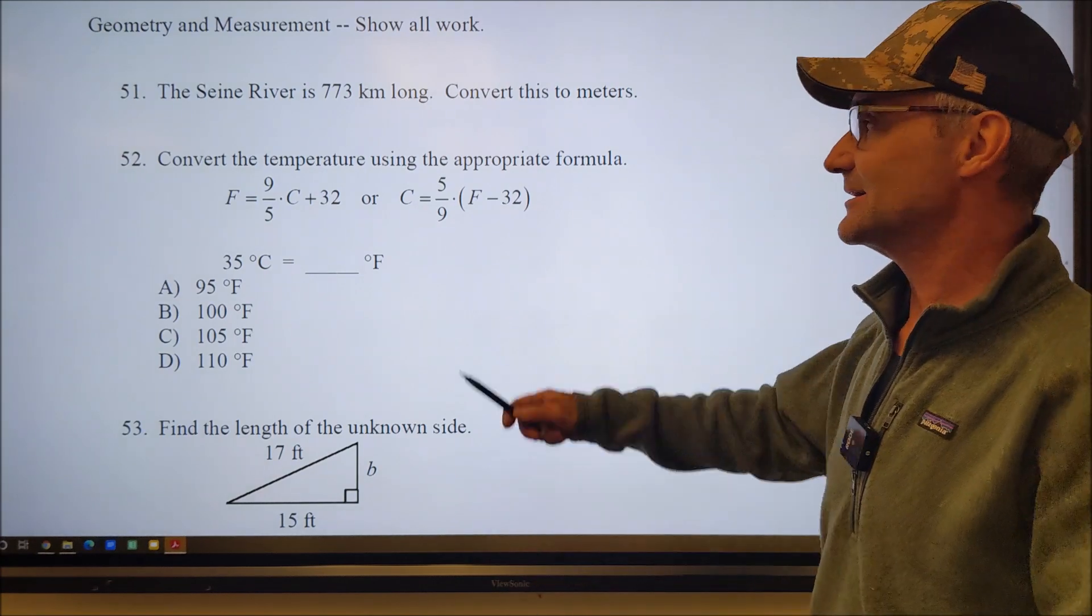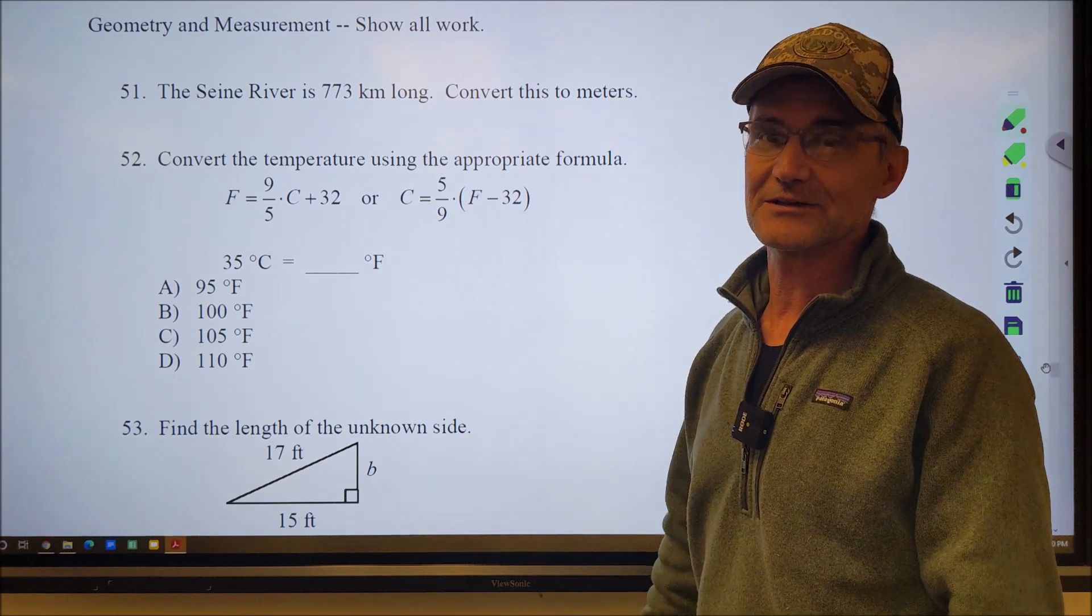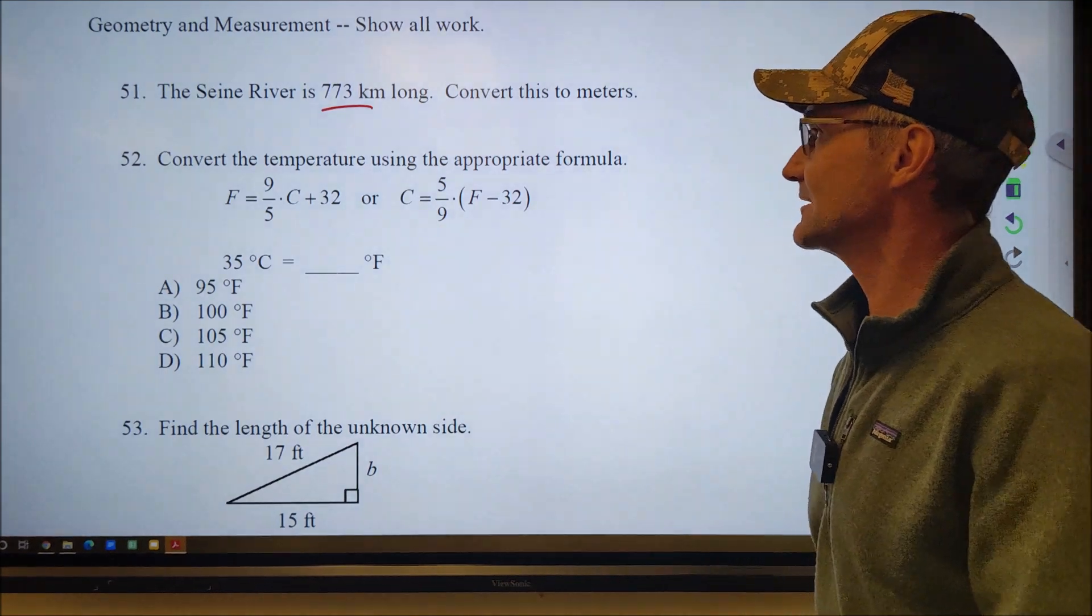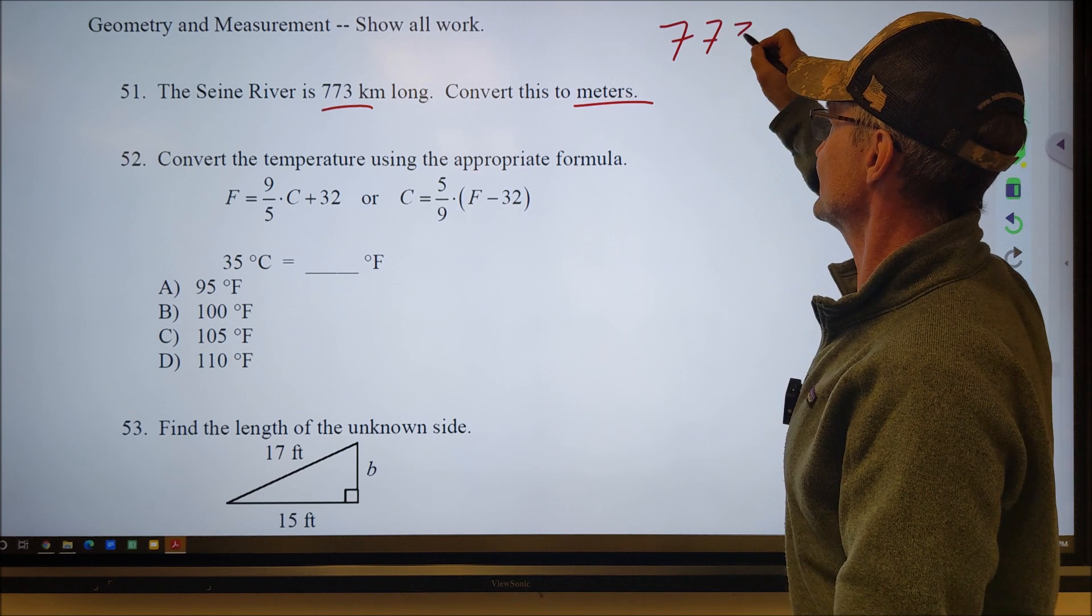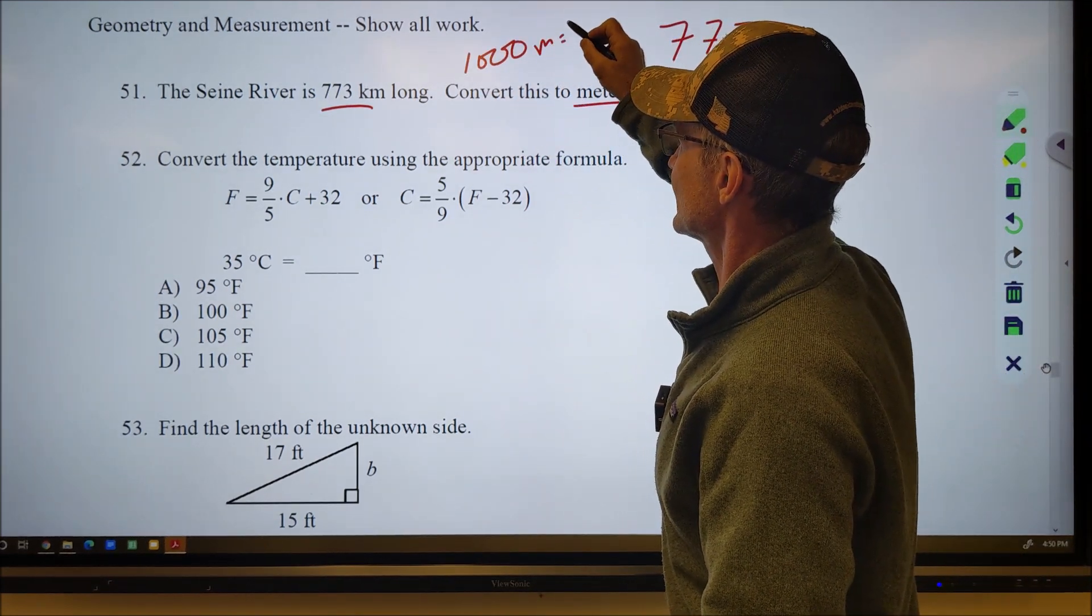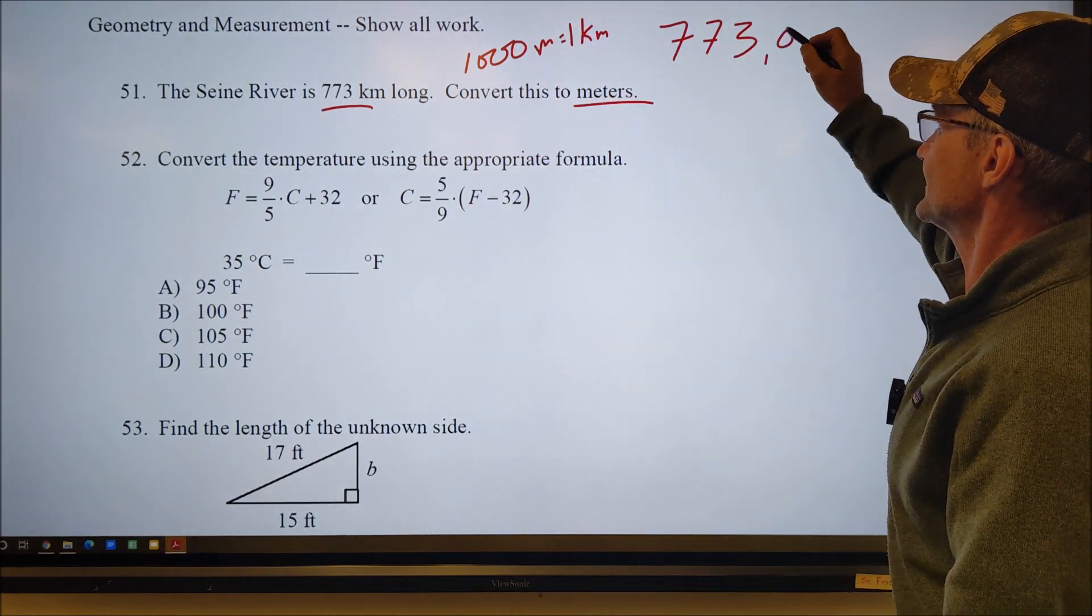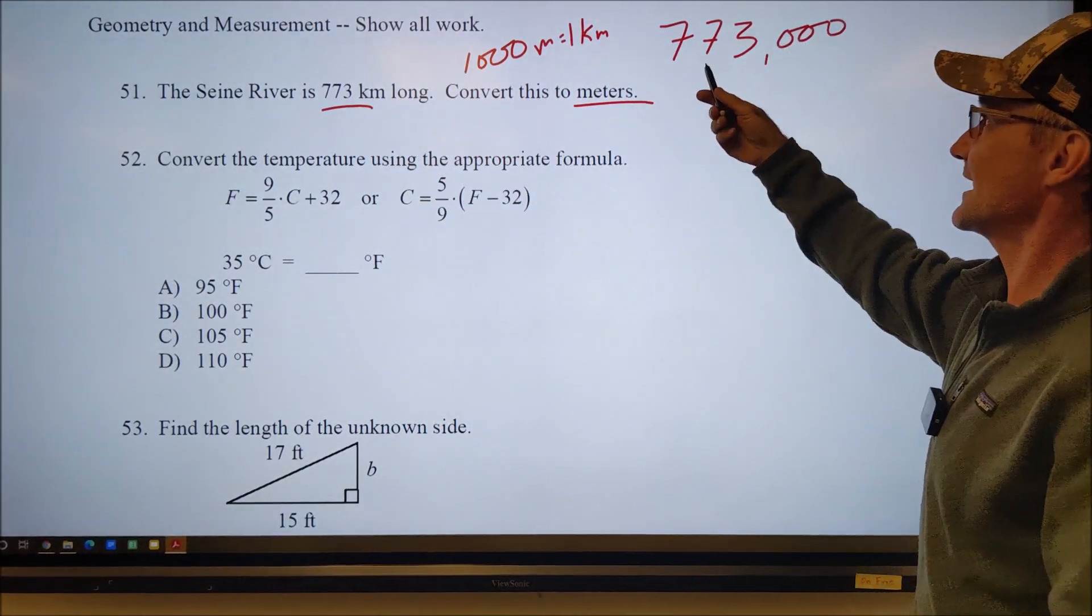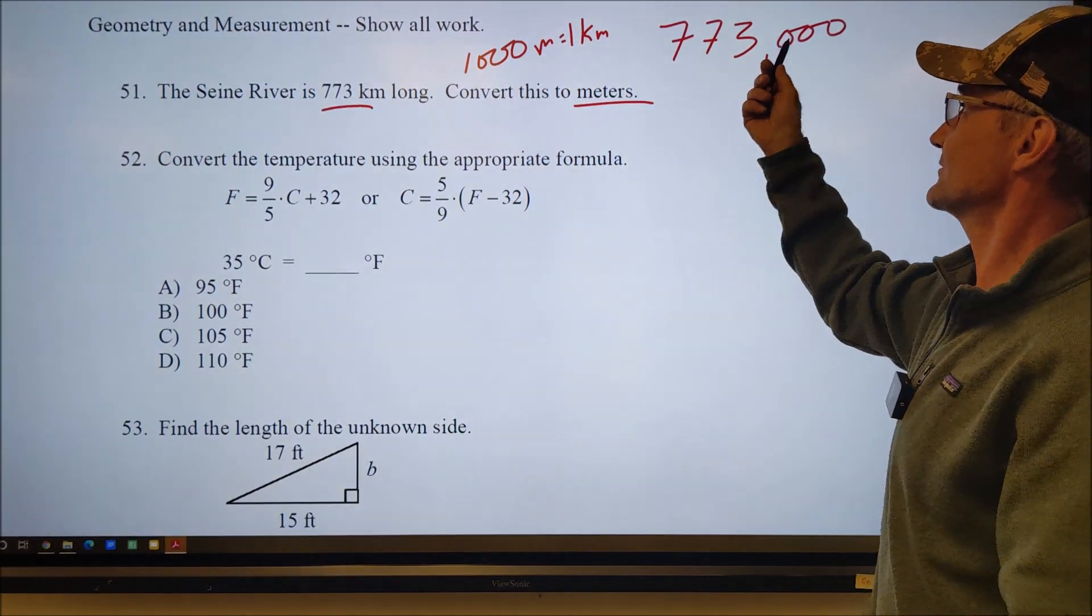So with that said, let's go ahead and get started. Go ahead and pause the video, do the next three or four problems, and then when you're done doing them, unpause the video and watch me go through them. So number 51, the Seine River is 773 kilometers long. Convert this to meters. So I have 773. There are 1,000 meters in one kilometer. So I got three zeros here. So I just add three zeros to that. So the river is that long in kilometers or that long in meters.